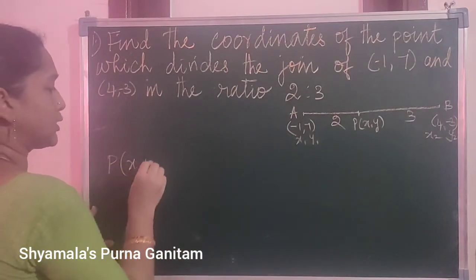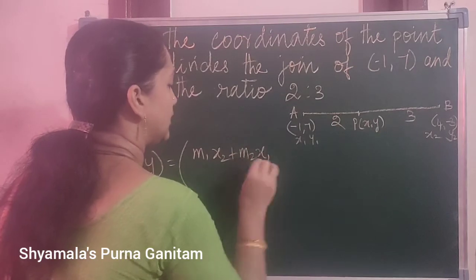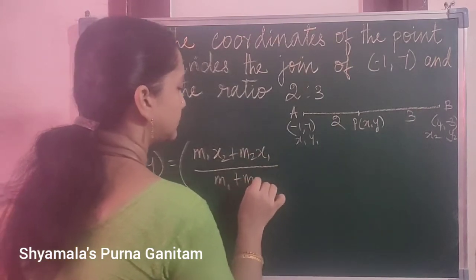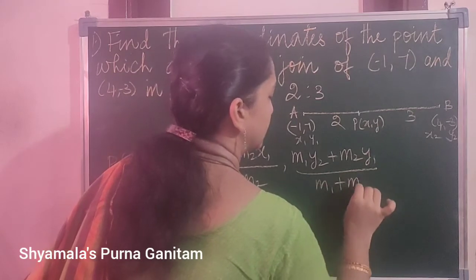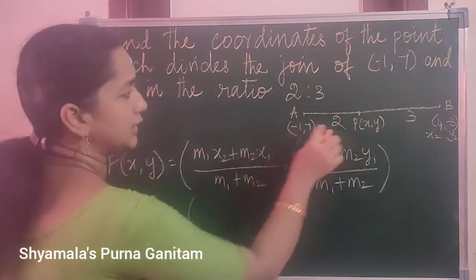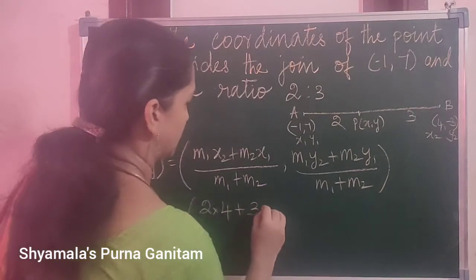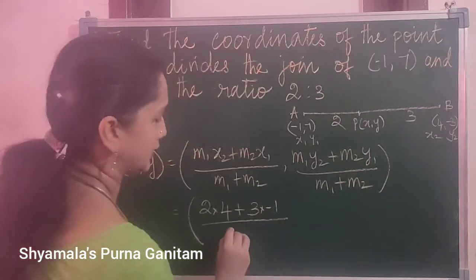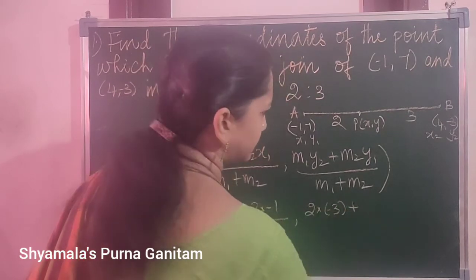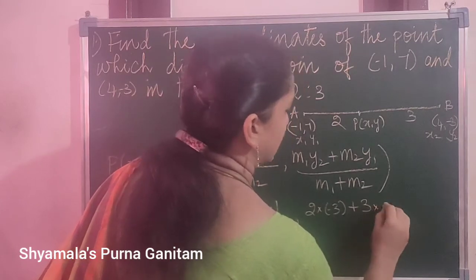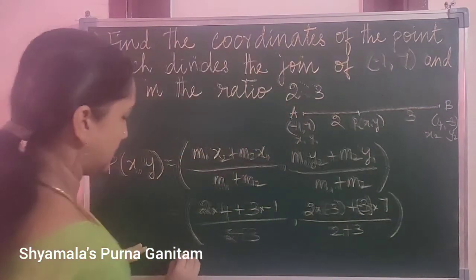So section formula. You are asked to find this coordinate point only. First write the section formula: M1·X2 plus M2·X1 divided by M1 plus M2, comma, M1·Y2 plus M2·Y1 divided by M1 plus M2. Substitute everything. M1 is 2, M2 is 3. So 2 into X2 is 4, plus 3 into X1 is -1, divided by 2 plus 3. And here it is 2 into Y2 is -3 plus 3 into Y1 is 7, divided by 2 plus 3.